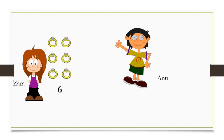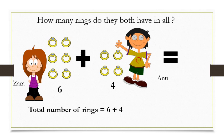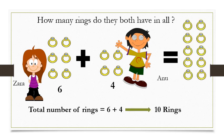Here comes another question. Two friends, Sarah and Anu. Sarah has 6 rings and Anu has 4 rings. Find how many rings do they both have in all. You can find it by adding them. 6 plus 4 equals how many rings? Count the number of rings: 1, 2, 3, 4, 5, 6, 7, 8, 9, 10. Total number of rings equals 10. So both Sarah and Anu have 10 rings in all.